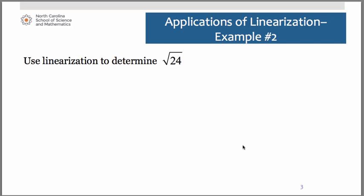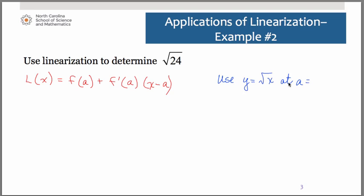Once again, we're going to use linearization to do that. As we saw in the last example, we need a function that is going to serve as the basis in our linearization, as well as the a value that we will use in the linearization as well. Because we're trying to do square root of 24, let's use the function square root of x. And we need an a value to use. We want that a value to be close to 24, and something that would be nice to take the square root of. Let's use 25.